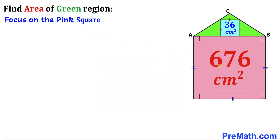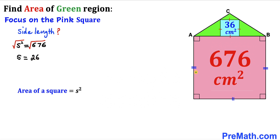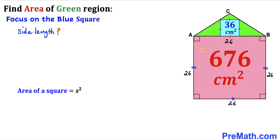Let's begin with the pink square whose area is 676 cm² and calculate its side length. Recalling the area of a square formula: Area = s². So s² = 676. Taking the square root on both sides, the side length s turns out to be 26 cm. So the side length of this pink square is 26 cm.